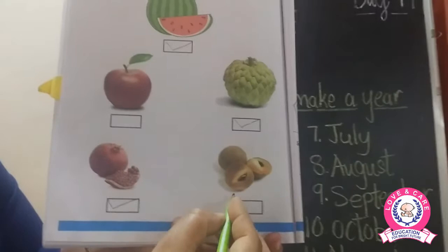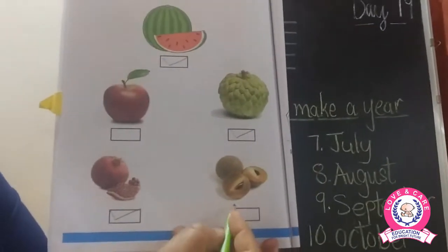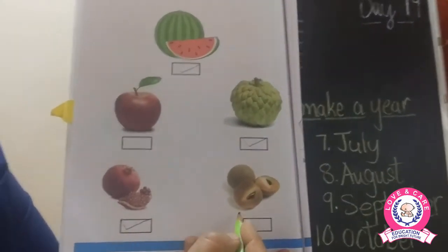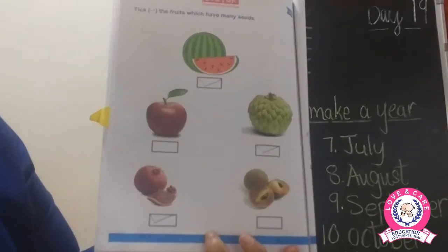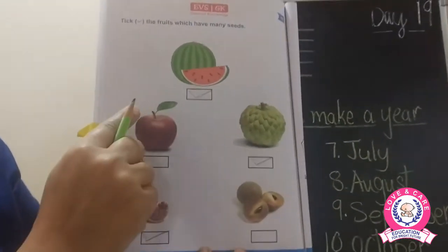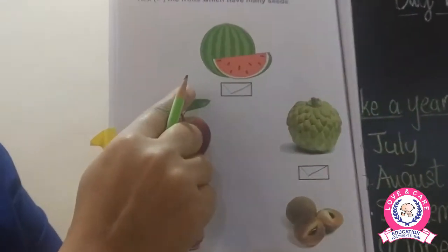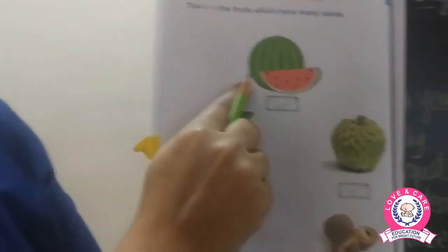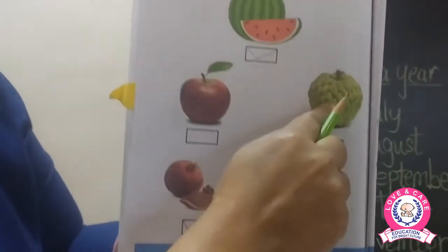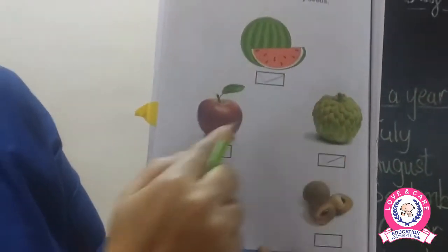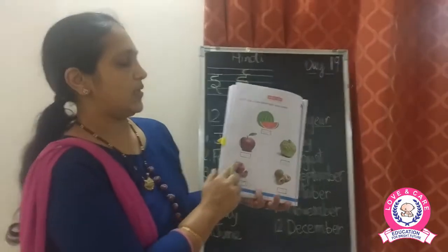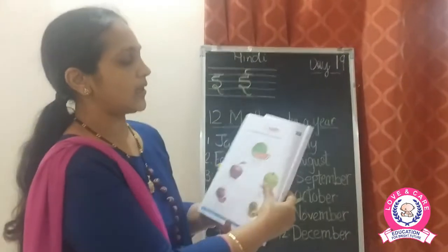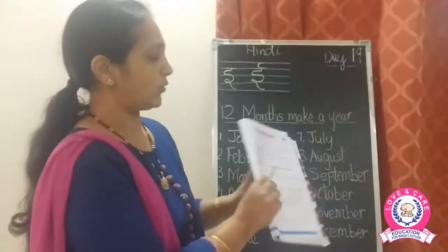Now this is chikku — chikku does not have too many seeds, so we will not take it. So which fruits are we going to take? Watermelon, custard apple, and pomegranate — because these three fruits have many many seeds.